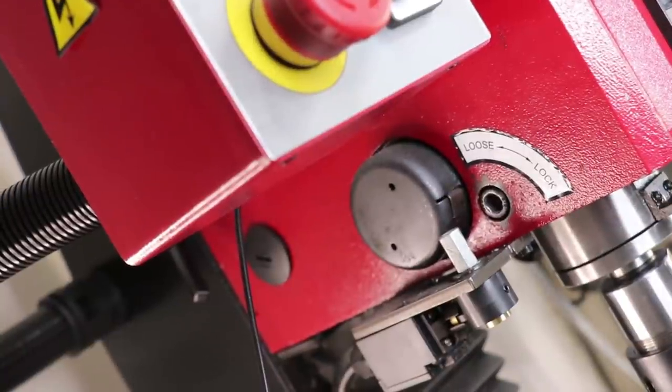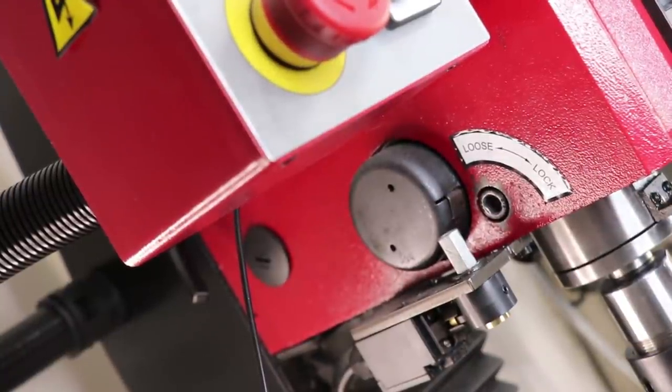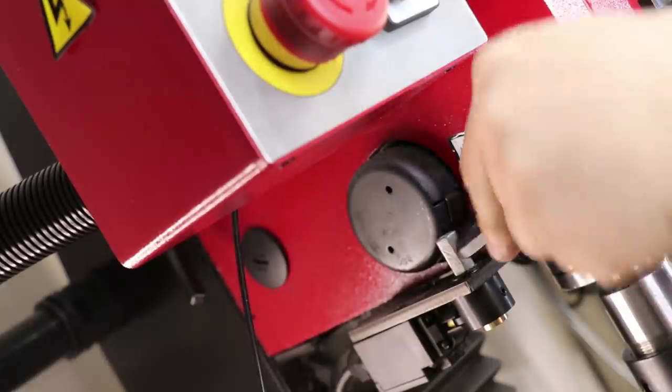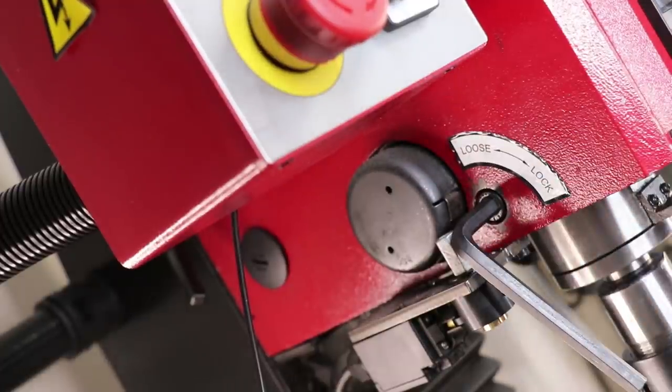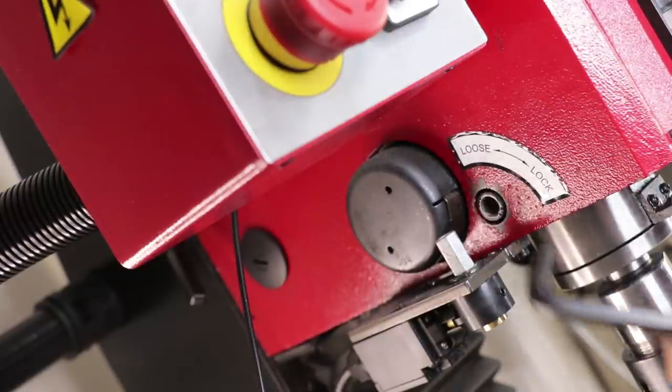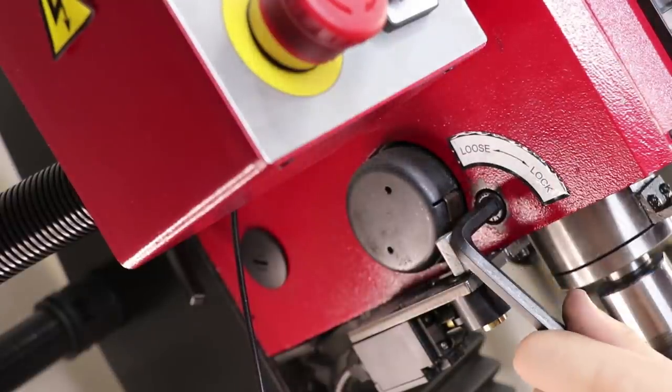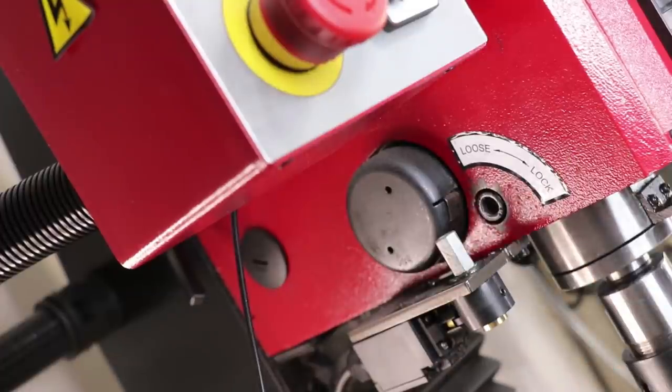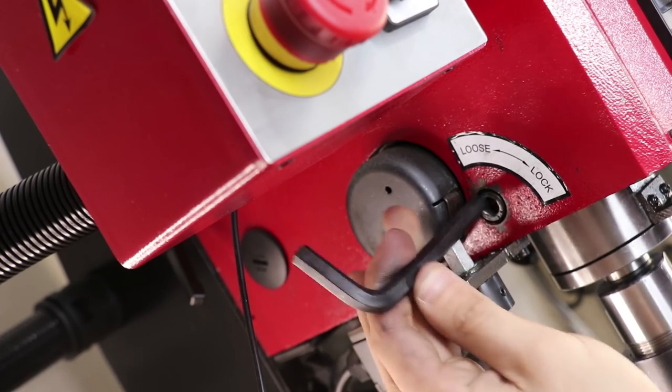The next thing I'd recommend will be swapping out the quill locking bolt for a proper handle. The stock setup is just a cap head screw which you tighten with an allen key to lock the quill and it works fine but if you need to do a lot of fine adjustment using the quill, a permanent handle is the way to go. Now I personally need the ability to remove the handle periodically so instead I went with a different solution.